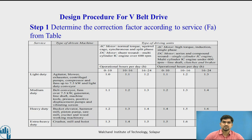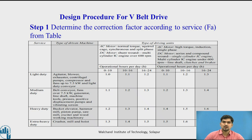In this table, the first column gives the type of service. Under light duty, if the type of machine is an agitator, blower, exhaust fan, centrifugal pump, or compressor, we refer to that column. The table also gives multiple operation hours per day — if the machine works for 15 hours per day, we refer to the corresponding column. According to the type of service, the machine type, and the hours per day, we select the proper correction factor FA.